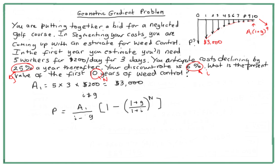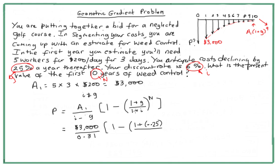So the denominator is 0.31. We have $3,000 divided by 0.31, multiplied by 1 minus [(1 + (−0.25)) over (1 + 0.06)] to the power of 10. That means the numerator inside the bracket is 0.75, giving us 0.75 divided by 1.06, all to the power of 10.